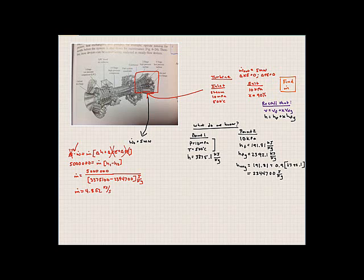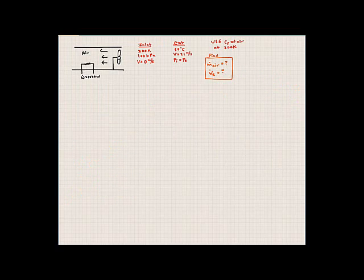That's a practical example used in power generation systems, showing how to apply the first law of thermodynamics to find the required mass flow rate. Now for the last problem from chapter 6, also dealing with an open system: let's look at a hair dryer. A hair dryer is basically a fan moving air through a tube past a resistive heating element.